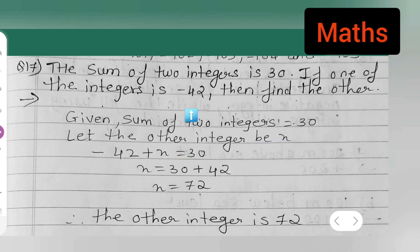Now, you all have to add it. -42. If one of the integers is -42, the other we don't know. So, -42 + x is equal to total. What is the sum of the two integers? 30.